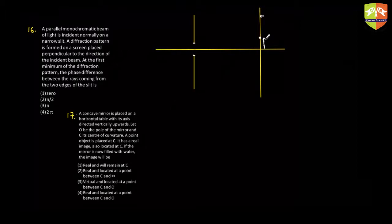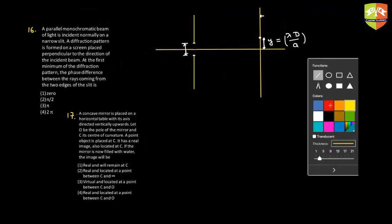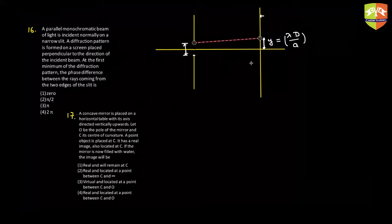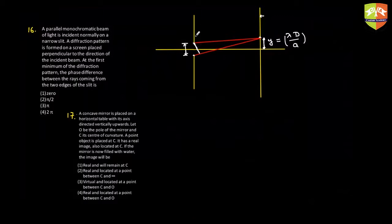The first minima location: distance y from center equals λD/a, where a is the width of the single slit. This is similar to the maxima expression in double slit, but for single slit the minima occur at λD/a. To find the phase difference between rays from the two edges of the slit, we connect those two rays and drop a perpendicular — the path difference Δx equals a·sinθ.